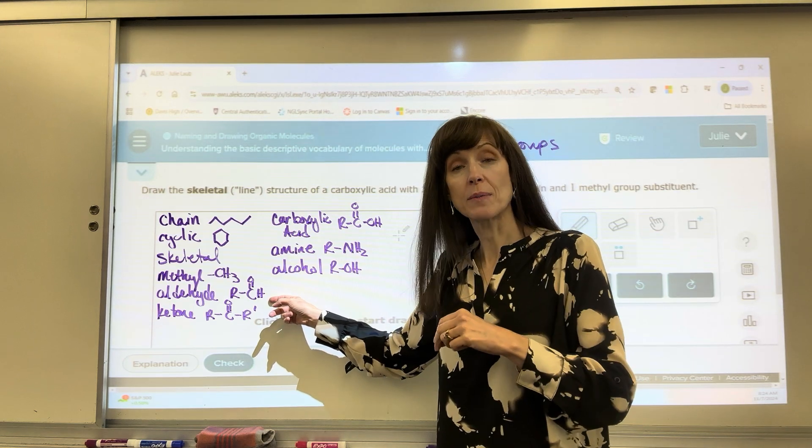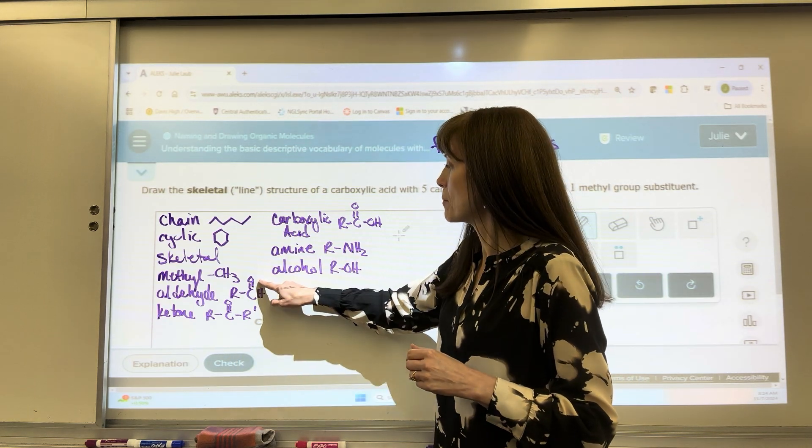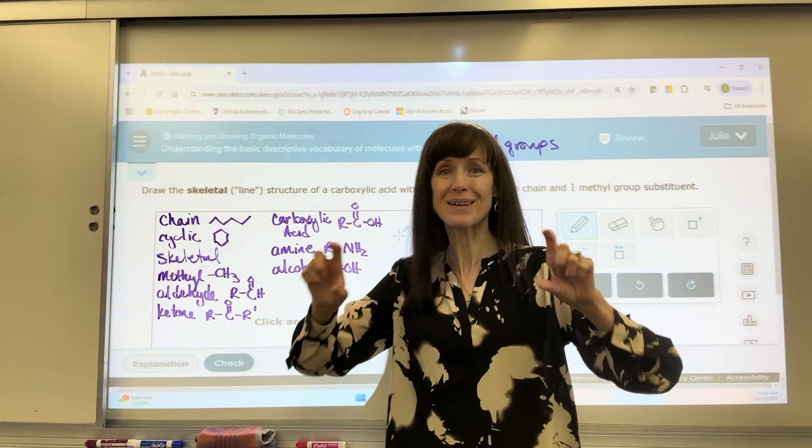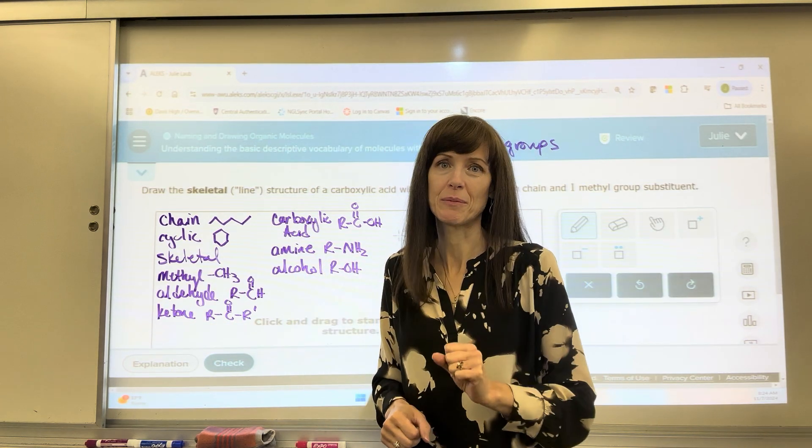And then functional groups, aldehyde. The last carbon in the chain has a double bonded oxygen. A ketone is somewhere in the middle of that carbon chain. There's a double bonded oxygen.